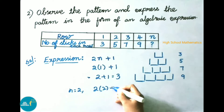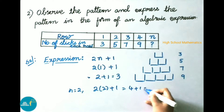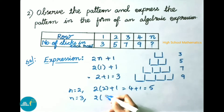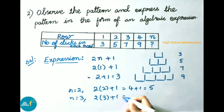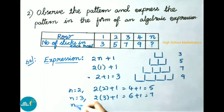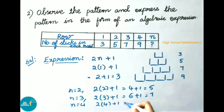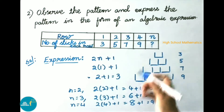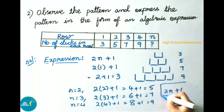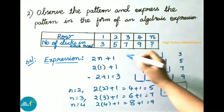For n equals 3: 2 times 3 plus 1 equals 7. For n equals 4: 2 times 4 plus 1 equals 9. So for n number of rows, the algebraic expression is 2n plus 1.